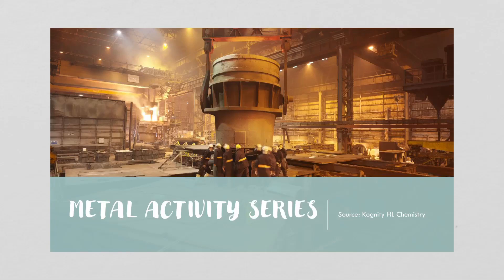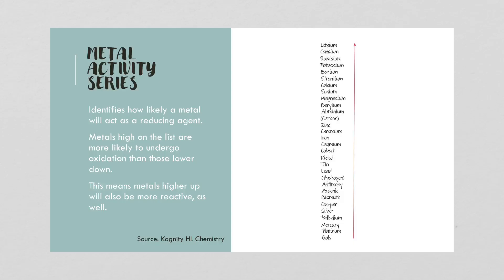In this video we're going to take a look at the metal activity series and determine how certain elements are more reactive than others. The metal activity series identifies how likely a metal will act as a reducing agent. Metals high on the list are more likely to undergo oxidation than those lower down, which means that metals higher up will also be more reactive.